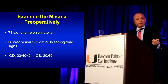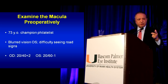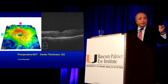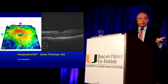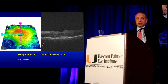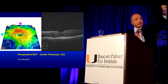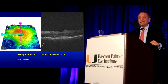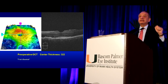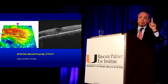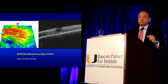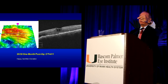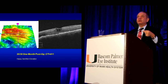This is a patient of mine — a very well-known stamp collector — with blurry vision in the left eye and difficulty seeing road signs. Here's his preoperative OCT: he's got an epiretinal membrane with a central thickness of 322 microns. I told him: you have an epiretinal membrane with edema, and I bet that if you have the cataract operation, the edema will get worse. He did have the cataract operation, and one month post-op his edema was worse — so he knew what was coming. We then treated him with non-steroidal anti-inflammatory agents to resolve this problem.